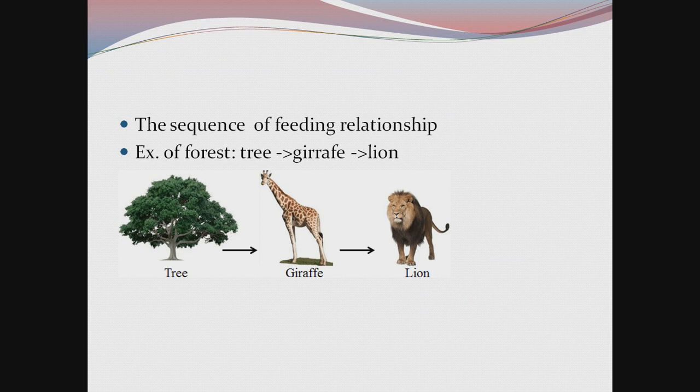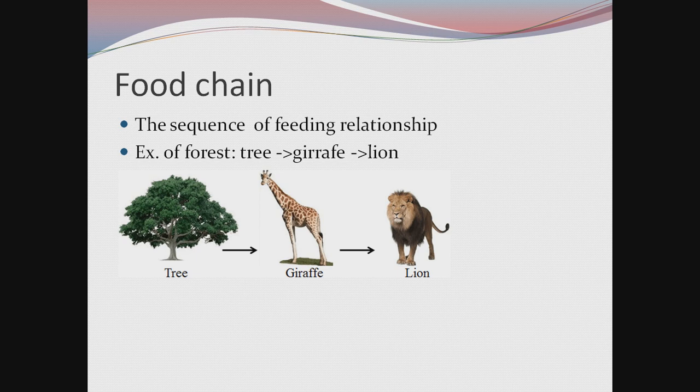We have studied what food is — all are eating food, all depend on plants for their food, and some depend on animals for their food. When we arrange them in a sequence, it is called as a food chain. The sequence of feeding relationships between organisms is called as food chain. A food chain always starts with the producers. As in the diagram, the food chain starts with the producer — the tree — eaten by the giraffe, a herbivore, which is then eaten by a lion, a carnivore. This arrangement of who eats whom in a sequence is called a food chain.